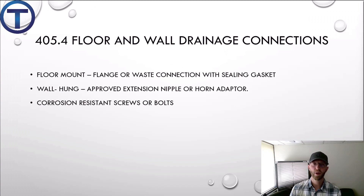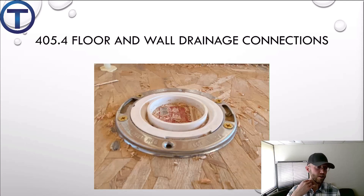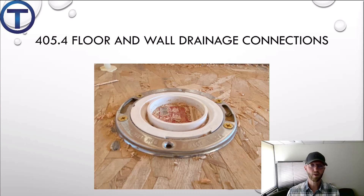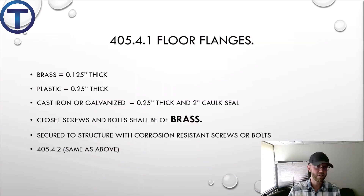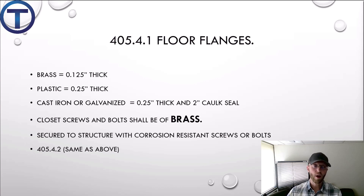405.4 covers floor and wall drainage connections. There are two basic ways to hook up a toilet: set it on a flange on the floor, or hang it on a carrier on the wall. In either case, corrosion-resistant screws and bolts must be used. Here's an example of a floor flange fastened to the subfloor using brass screws — brass is a corrosion-resistant material, specified in 405.4.1. Flange thickness details: brass at 0.125 inches, plastic at 0.25 inches, cast iron or galvanized at 0.25 inches. The screws or bolts must be brass and secured to the structure.